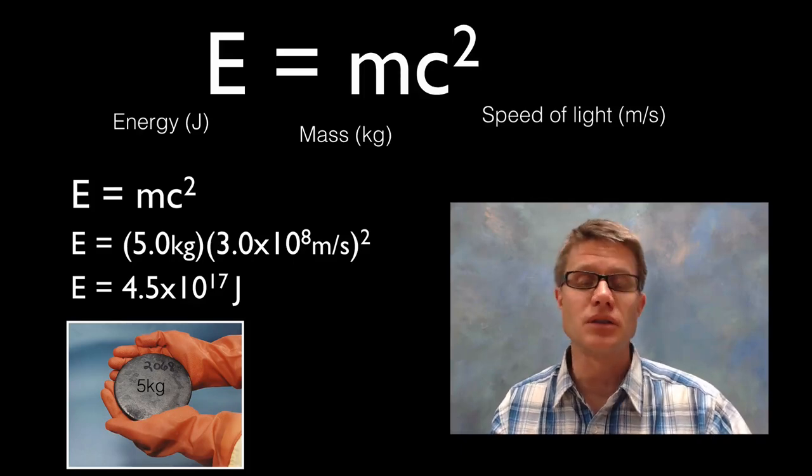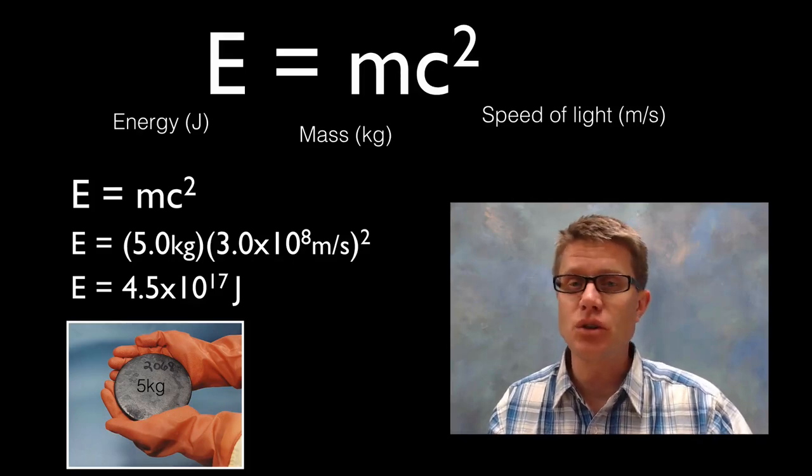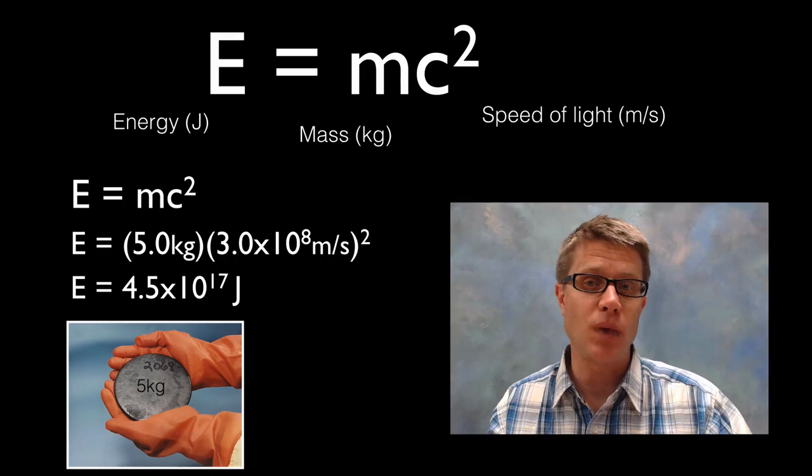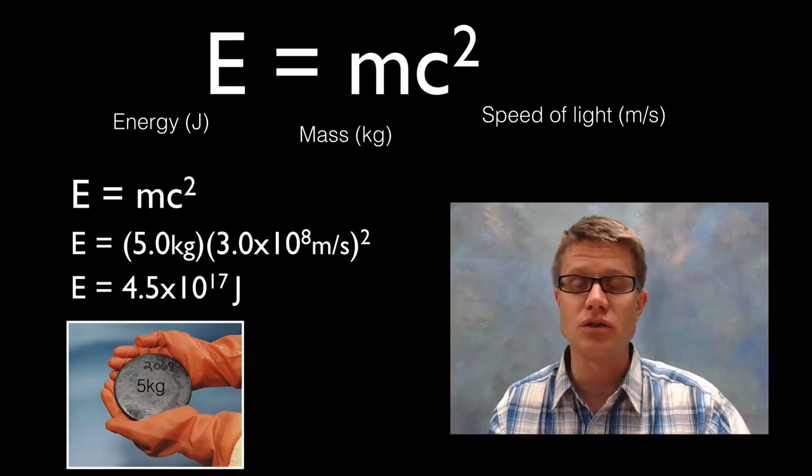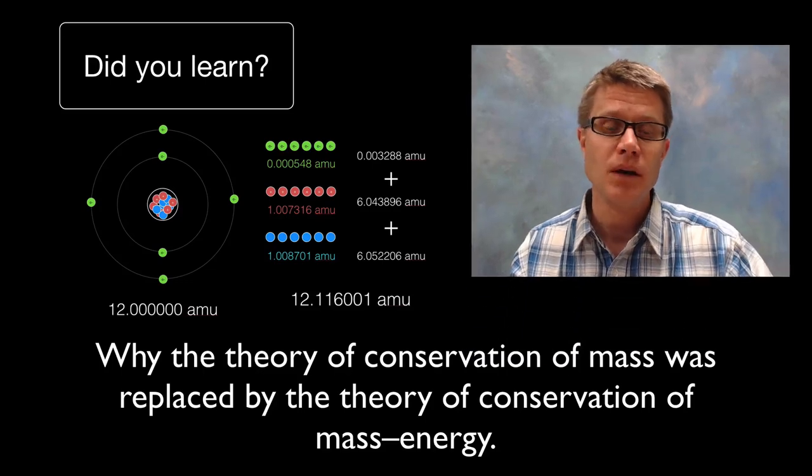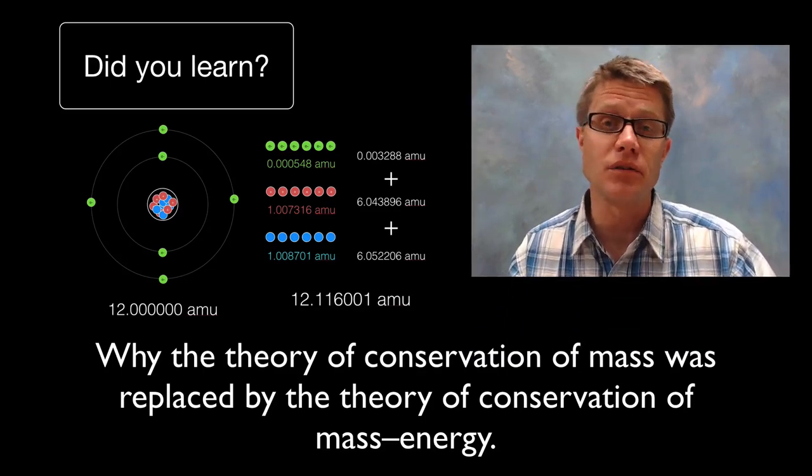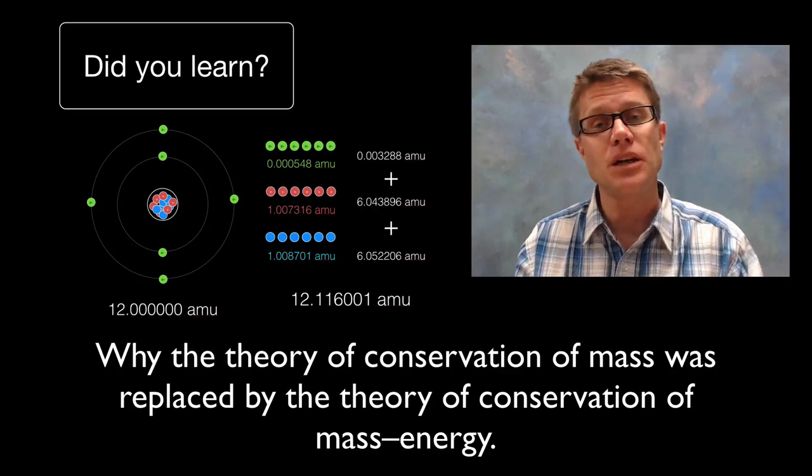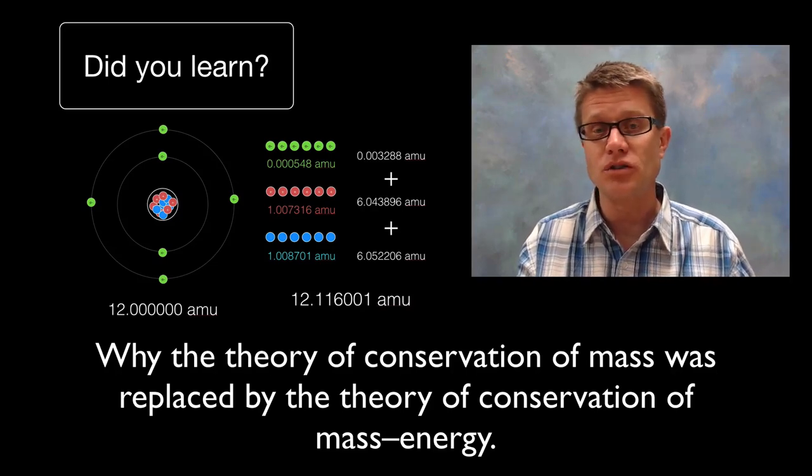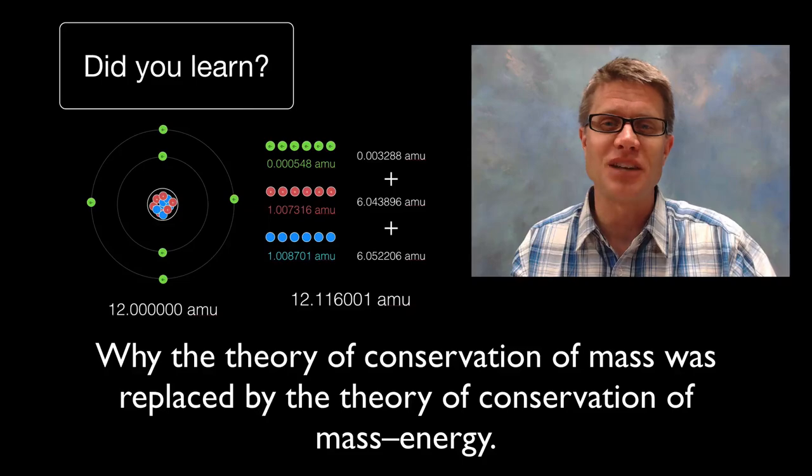And what you would find is this small amount of uranium would be able to light a light bulb for millions and millions of years. And so there's a huge amount of energy locked in that matter. Now obviously we'd lose energy. There would be energy loss along the way. But it's a really really large number. And so did you learn why the theory of conservation of mass was replaced by the theory of conservation of mass energy? It's because mass can be converted into energy and vice versa. And I hope that was helpful.